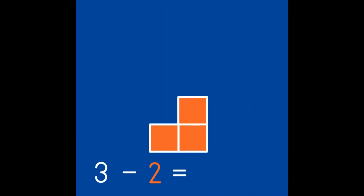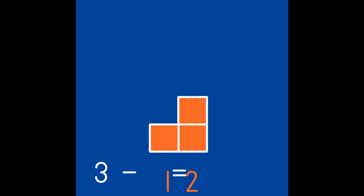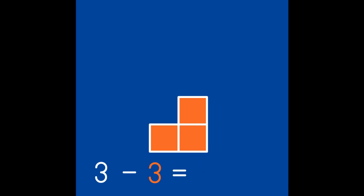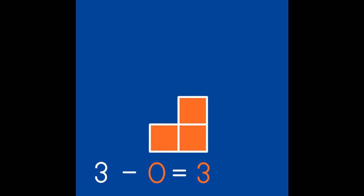Let's review separating the partners of 3. 3 take away 2 leaves the partner 1. Or 3 take away 1 leaves the partner 2. 3 take away 3 is the same as 0. And 3 take away 0 is the same as 3.